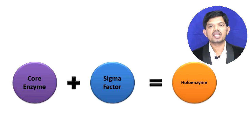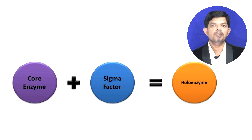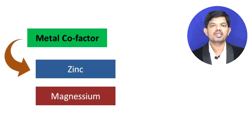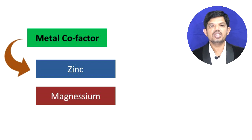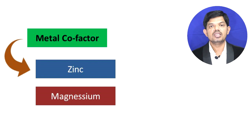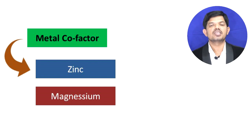Apart from RNA polymerase, some metals also play an important role during transcription. Zinc and magnesium are very important during the transcription process.